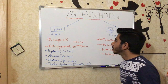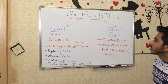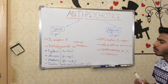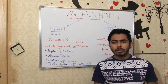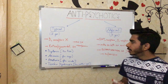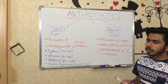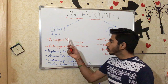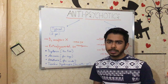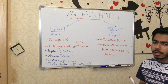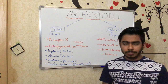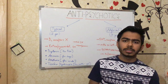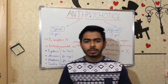This was about the differences between typical and atypical antipsychotics. In the next section I will talk about which drugs come under the category of typical antipsychotics and which under atypical antipsychotics. See you in the next section — thanks for watching this video.